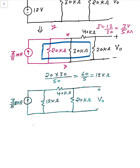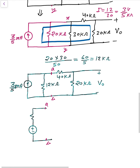Now apply source transformation again — label the terminals as A and B. The voltage is 3/5 into 12, which equals 36/5 volts.